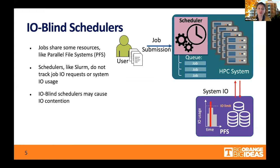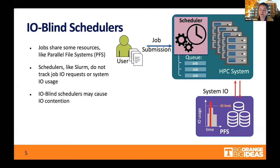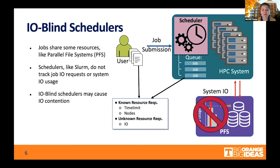What we can say today is that our jobs are I.O. blind, in the sense that we know there is a shared parallel file system in our HPC system — it's shared across the system — but the scheduler we are using today, and I'm referring to Slurm in particular, does not really track the I.O. requests that our jobs have. So we say the scheduler is I.O. blind, meaning there is no information about occurrences of I.O. contention and the causes of this I.O. contention.